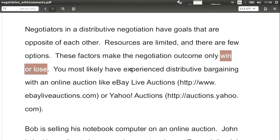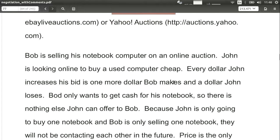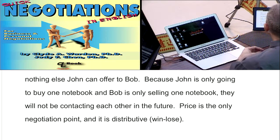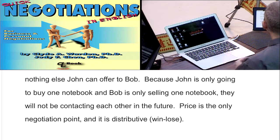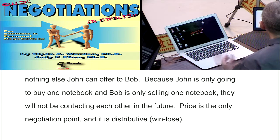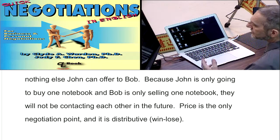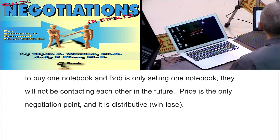A simple example we all understand is something like eBay or Yahoo auctions. In an auction, somebody wants to sell something and somebody else wants to buy. Say Bob wants to sell his notebook computer online, and John wants to buy a used computer cheaply. Every dollar that John increases his bid is one more dollar that Bob will make — the buyer loses one more dollar in that transaction. So when the price goes up, the seller gains and the buyer loses.